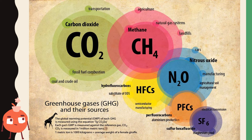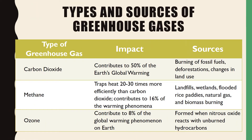Since greenhouse gases trap heat from the sun in the atmosphere, and too much presence of these gases causes global warming, it is important to identify what these gases are, their impacts, and their sources. The first greenhouse gas is carbon dioxide, which contributes to 50% of the Earth's global warming. Carbon dioxide can be formed by burning of fossil fuels, deforestation, and changes in land use. Next is methane, which traps heat 20 to 30 times more efficiently than carbon dioxide and contributes to 16% of the warming phenomena. Methane is produced by landfills, wetlands, flooded rice paddies, natural gas, and biomass burning.